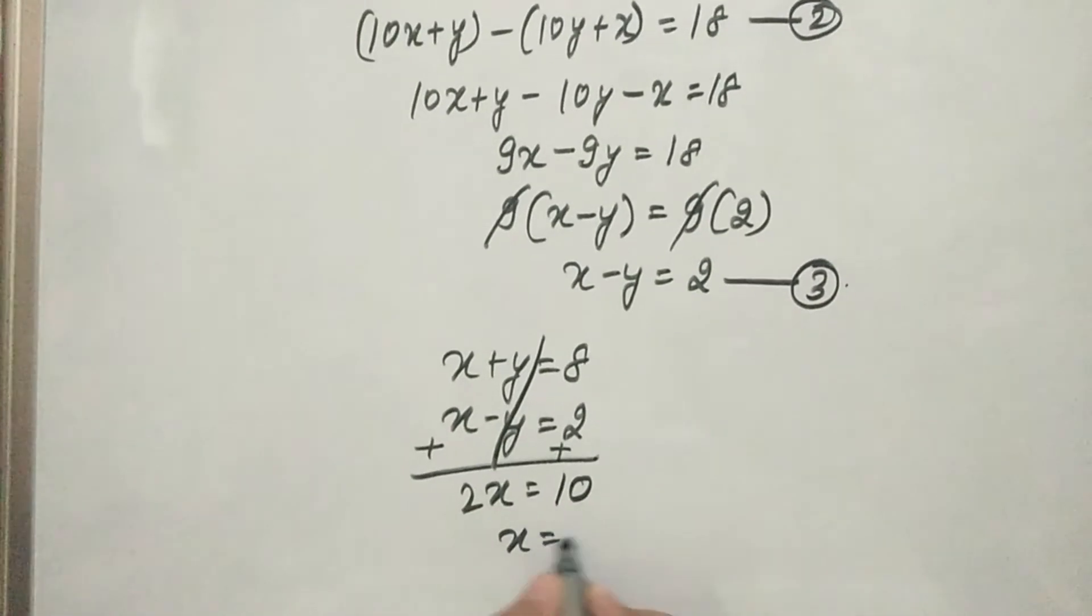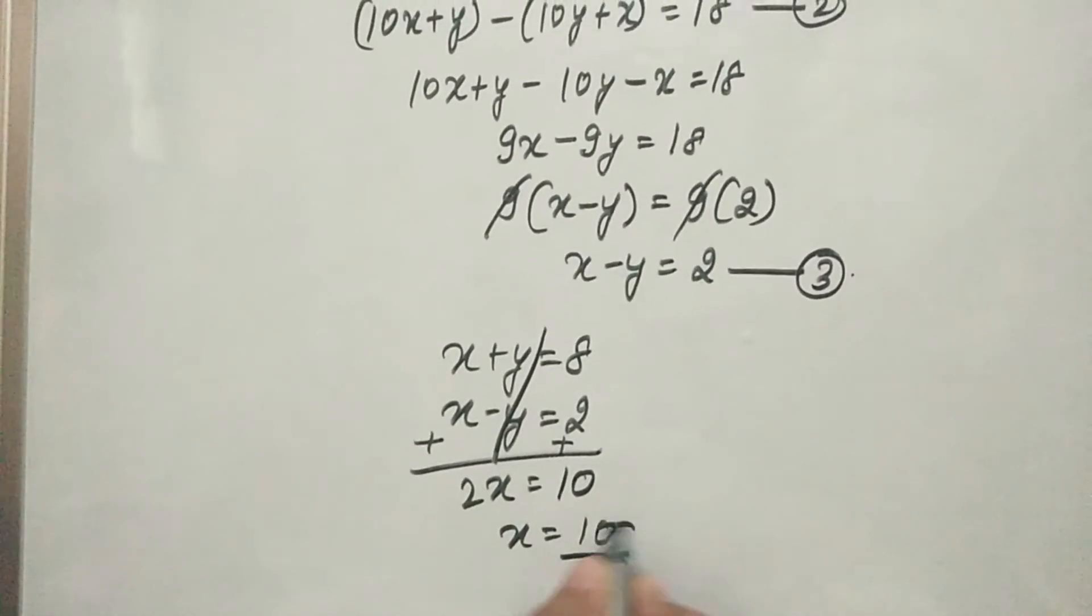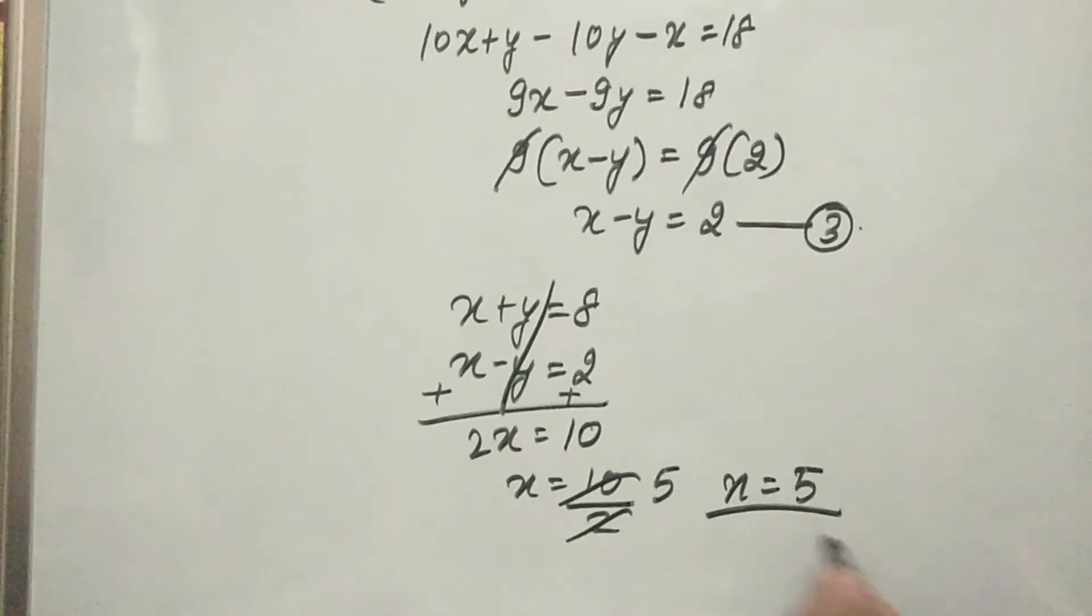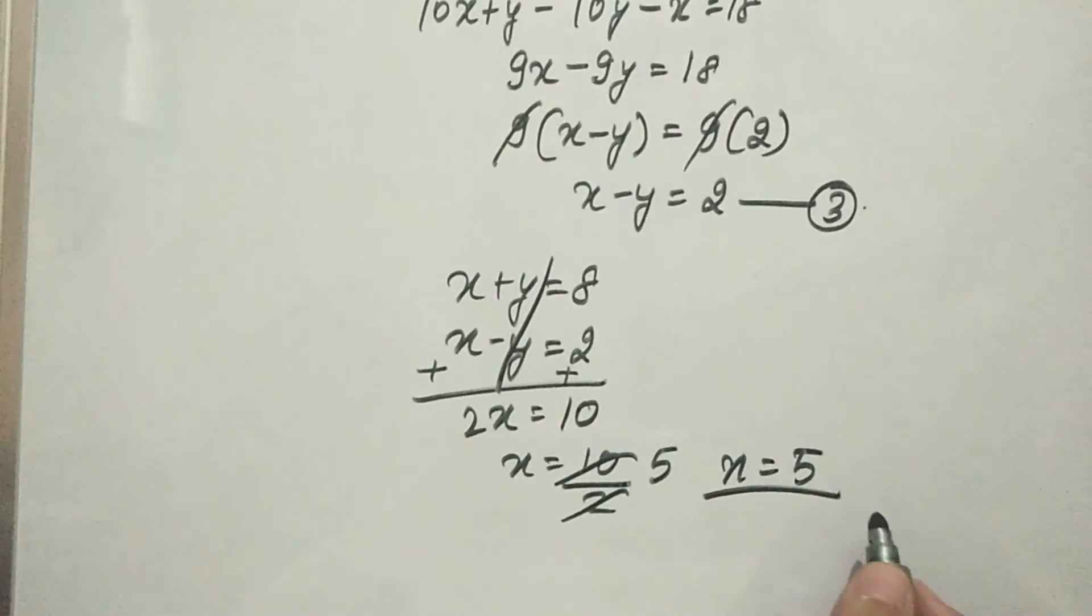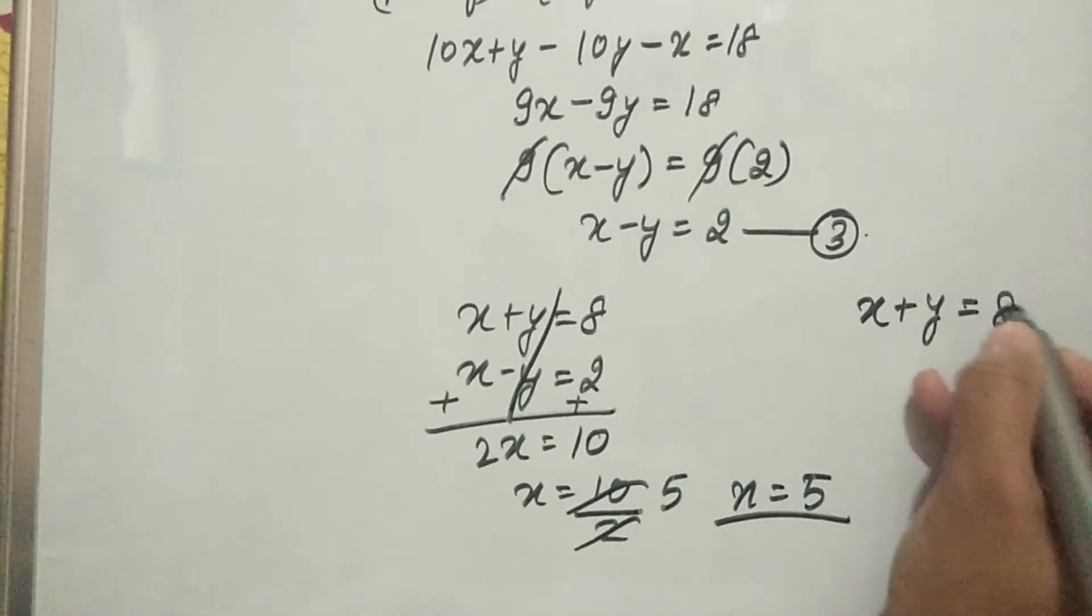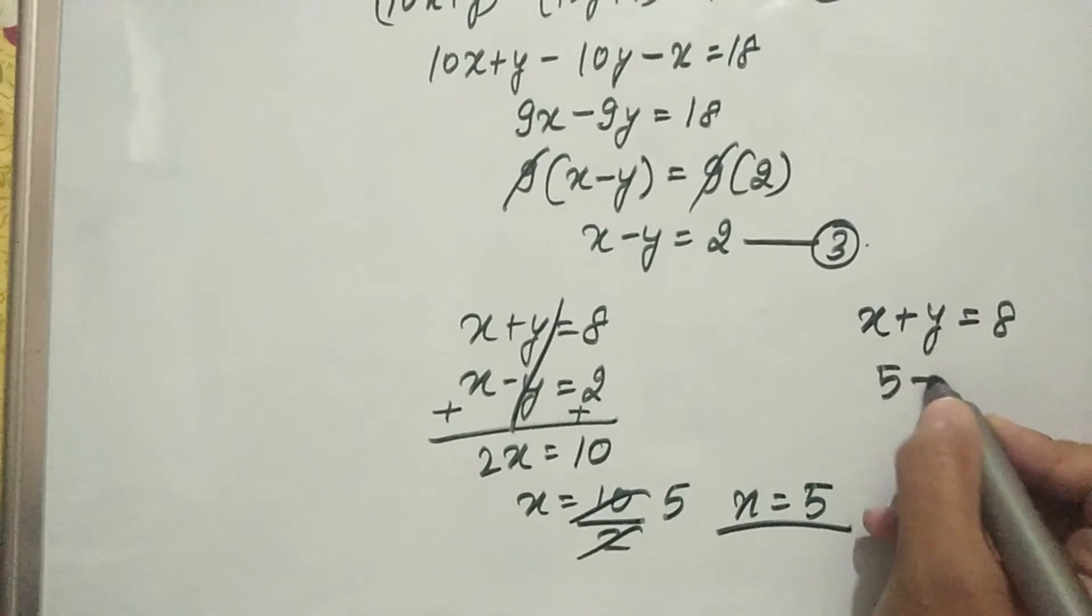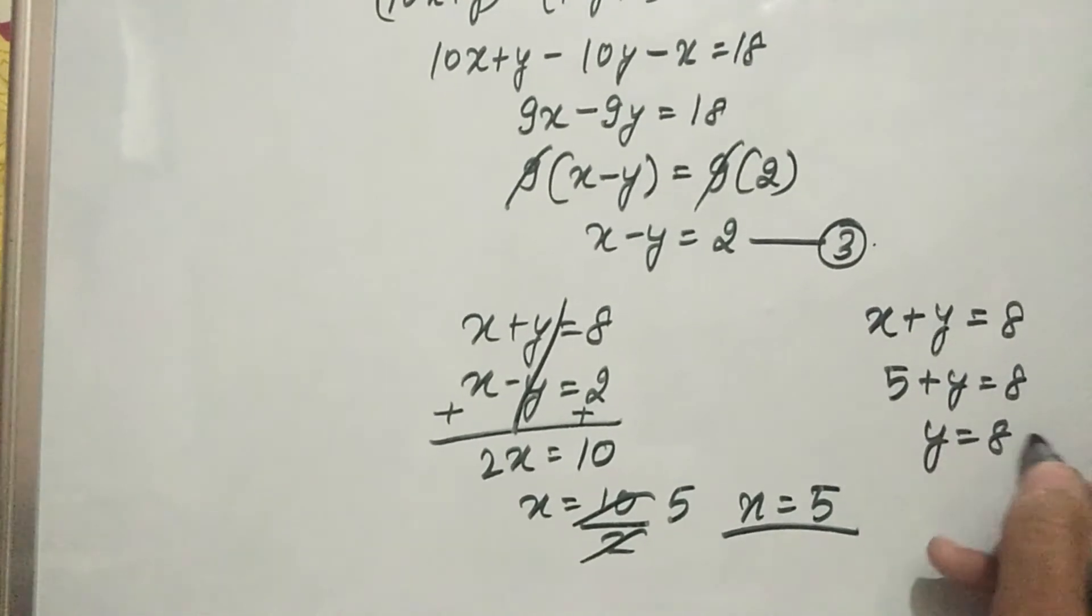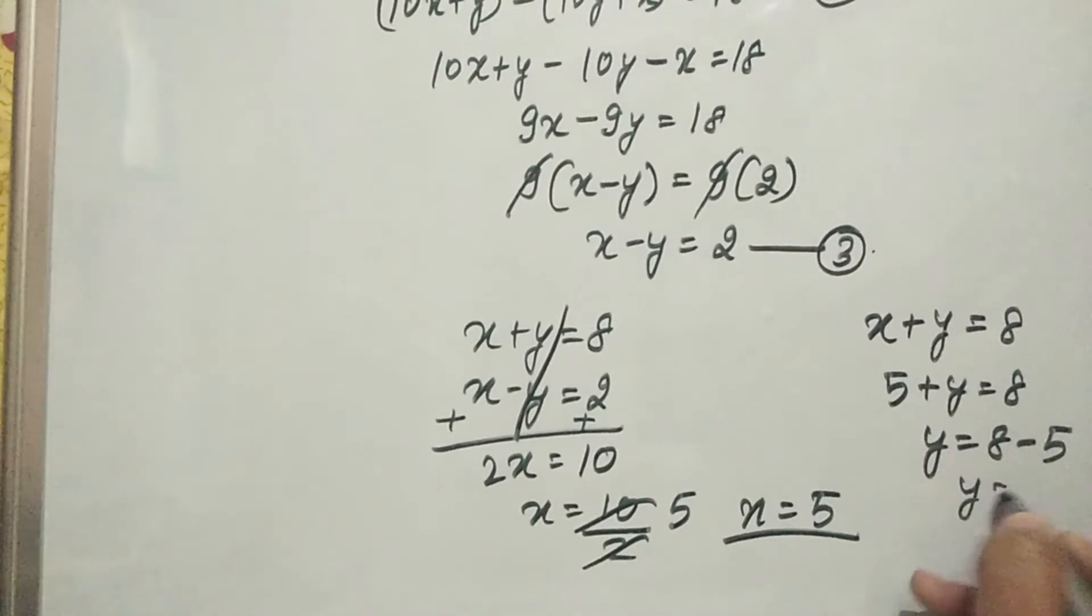So 2x equals 10, x equals 10 divided by 2, which is 5. Now we substitute x equals 5 into any equation. x plus y equals 8, so y equals 8 minus 5, y equals 3.